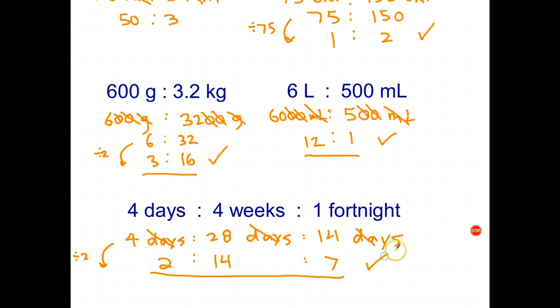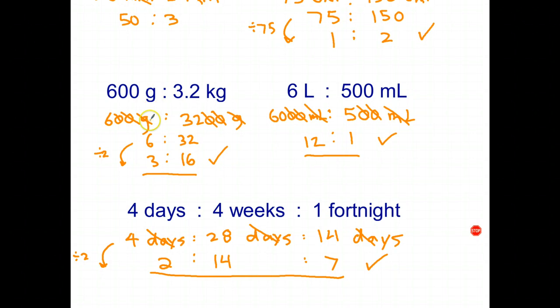So if you have a ratio that does have units, convert to the same units — always choose the smaller unit to avoid decimals — and then simplify. Overall, once you've had some practice, it's pretty straightforward.